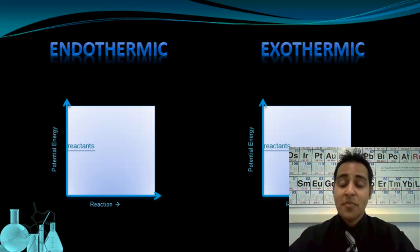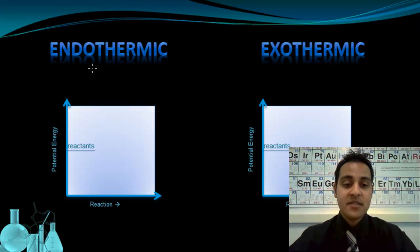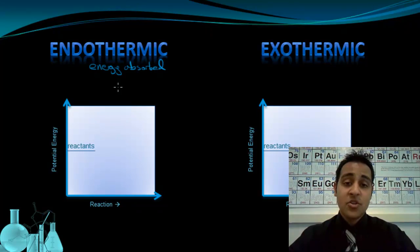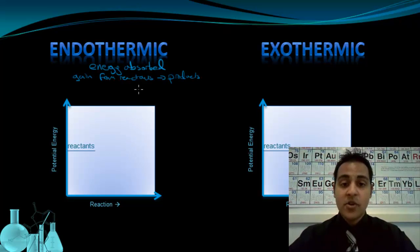Let's start by recapping endothermic and exothermic changes. We know that in endothermic processes, energy is absorbed, which means it's a gain in energy as we go from reactants to products. We know that for endothermic processes, the delta H is positive.